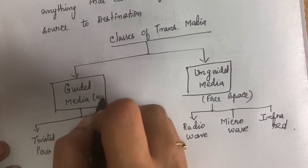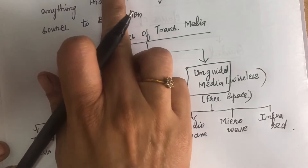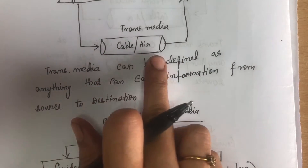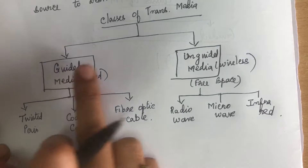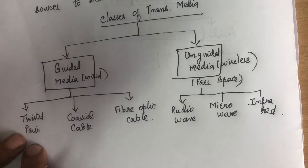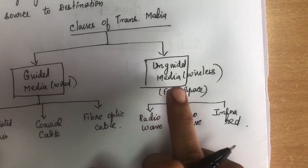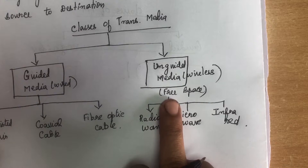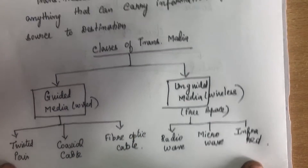Guided media is the wired type and unguided media is the wireless type. In guided media, signals are transmitted through a cable. In unguided media, signals are transmitted through free space using radio wave, microwave, or infrared wave. Now we will see in detail about guided media.